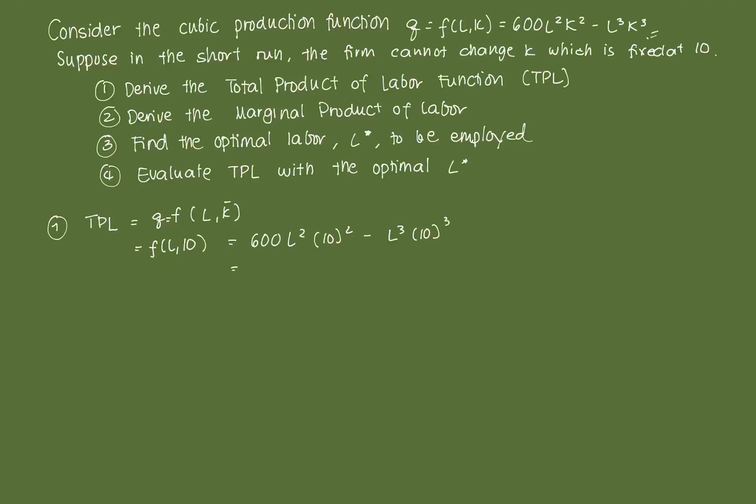We simplify this so that's 600, then 10 squared is 100. So 100 times 600, that's 60,000. So 60,000 L squared minus 10 cubed, that's 1,000. So that's 1,000 L cubed. And we call this our total product of labor function. That's 60,000 L squared minus 1,000 L cubed.